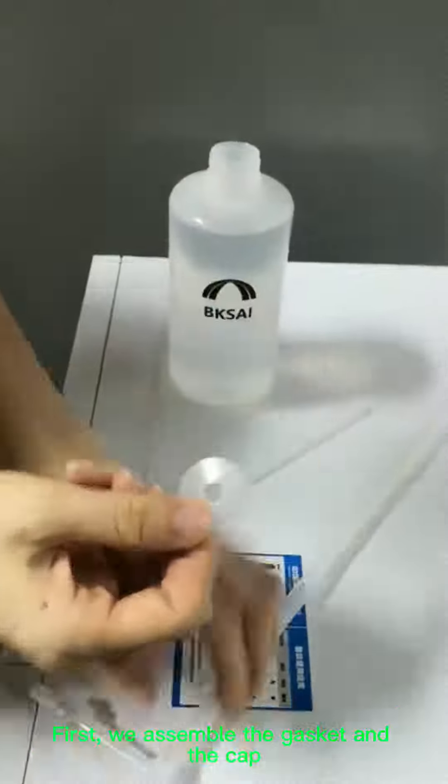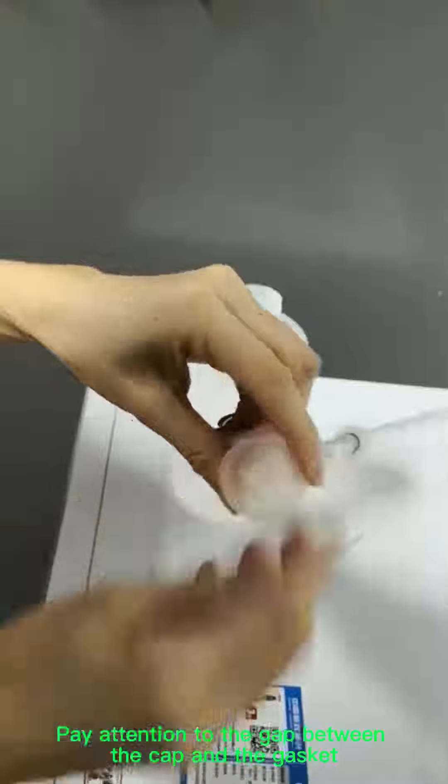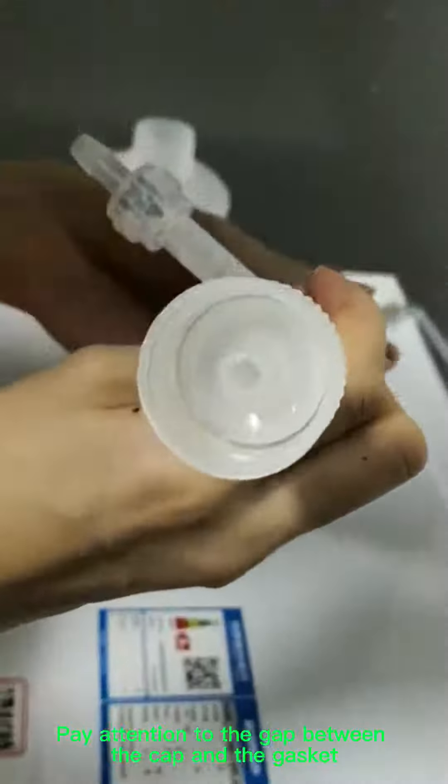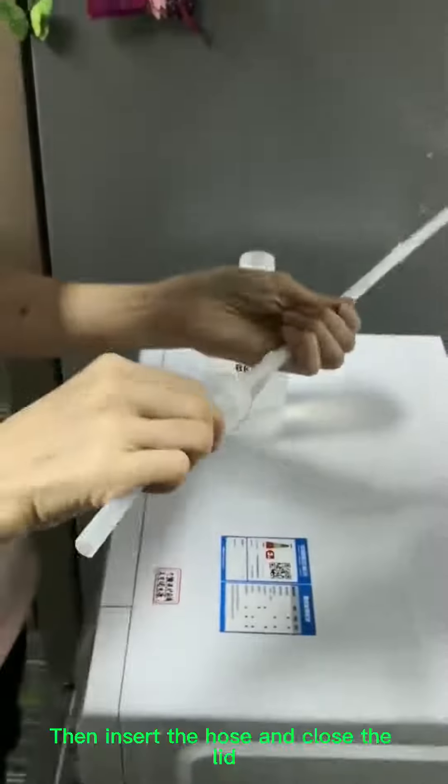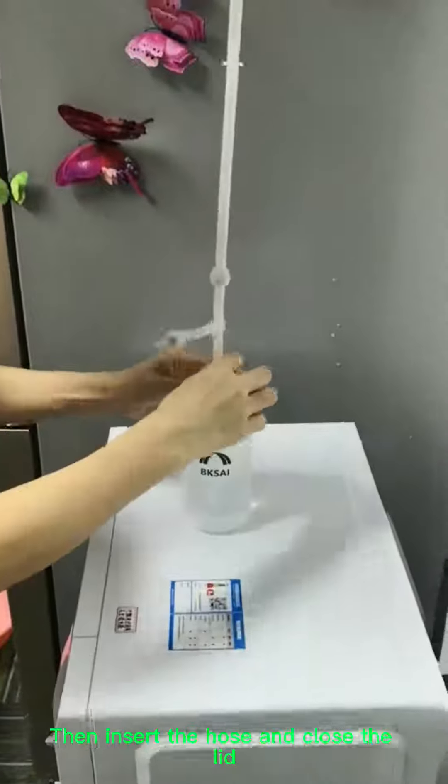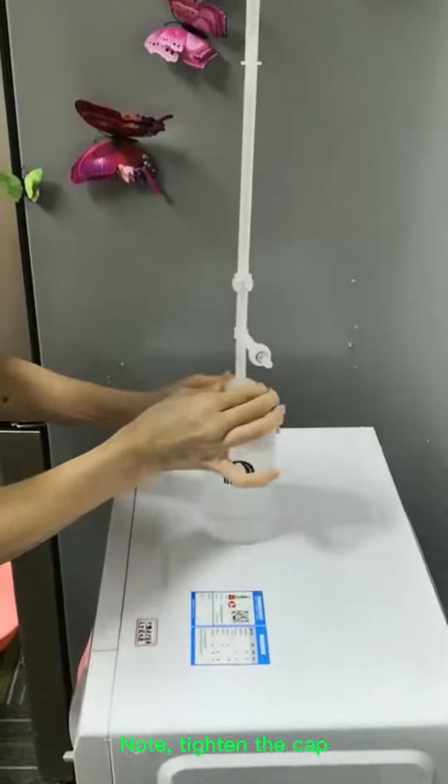First, install the gasket. Pay attention to the gap between the cap and the gasket. Then insert the hose through the hole in the lid. Now, tighten the cap.